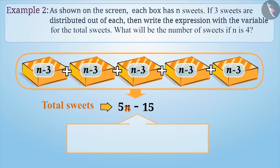Now let's find a solution to another question. Here, the value of n is given as 4. If the value of a variable is given, then while substituting this number in the expression, we must multiply it with the number before the variable. Therefore, 4 will be multiplied by 5. The product is 20 and 20 minus 15 will be 5. Hence, when n is equal to 4, then the number of remaining sweets will be 5.